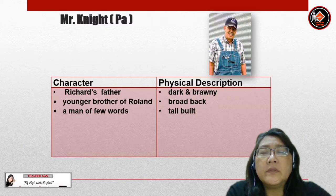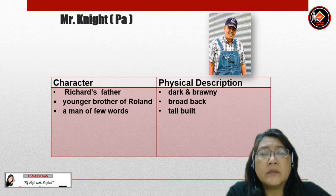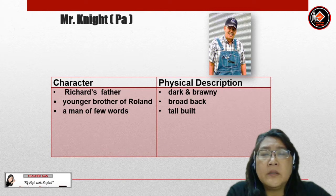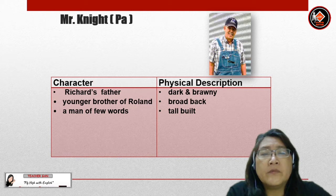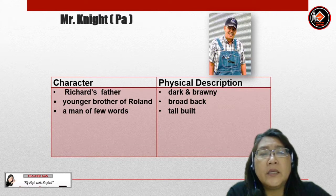In the novel Dear Mr. Kilmer, another character is Mr. Knight, or Pa. Pa is Richard's father. He is also the younger brother of Roland and he is a man of few words. Physical description: he is dark and brawny, has a broad back and is tall built.